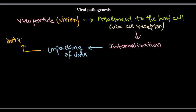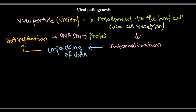After unpacking of the virus inside the host cell, the major part begins: DNA replication, then RNA synthesis, and then protein synthesis, because ultimately every expression is conducted by proteins. So majorly there are four different steps: one is virus particle attachment, second is internalization, third is unpacking, and fourth is the intracellular processes by the viruses. These are the four simple strategies taken up by viruses to elicit any kind of pathogenesis in the host cell.